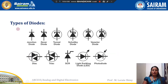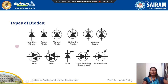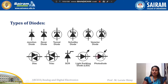Next, types of diodes. There are many types: junction diode, Zener diode, tunnel diode, Schottky diode, rectifier diode, TRIAC, SCR, light emitting diode, and photodiode. In our syllabus, we are going to see about LED, photodiode, and optocouplers.